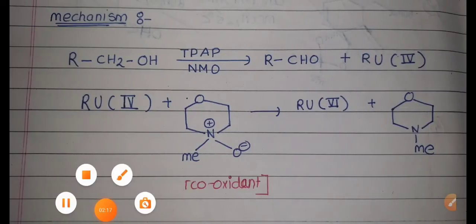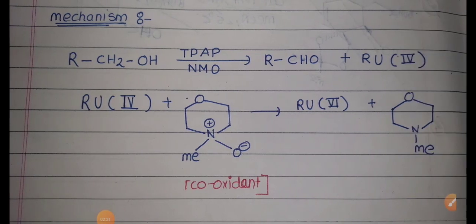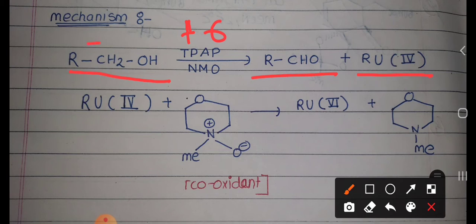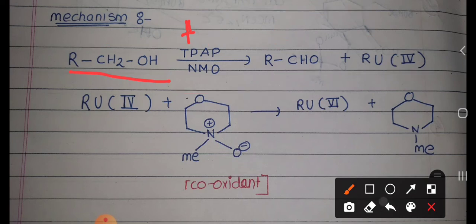Now we will look at the mechanism of this reagent. Here you can see the primary alcohol. In the presence of this reagent, the ruthenium is initially in the +6 oxidation state. After the conversion of the primary alcohol to aldehyde, the ruthenium is converted to the +4 oxidation state. This means the reagent itself gets reduced while oxidizing the alcohol — the carbon in the alcohol goes from −1 to +1 oxidation state.